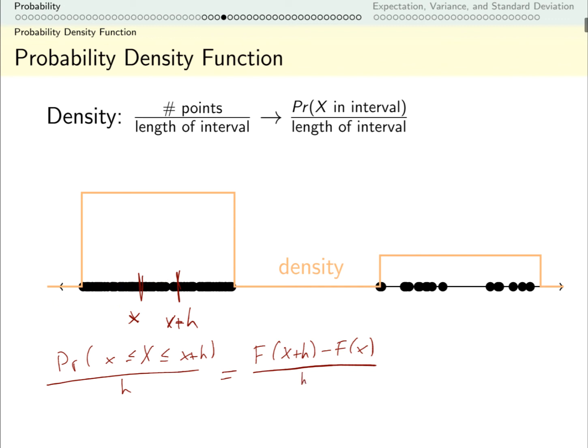And now if h is small, well, this should remind you of something. This is the definition of the derivative if h is going to zero. So I told you the cumulative distribution function would come in handy later. If we differentiate it, we can measure how densely packed these events are around a particular area.